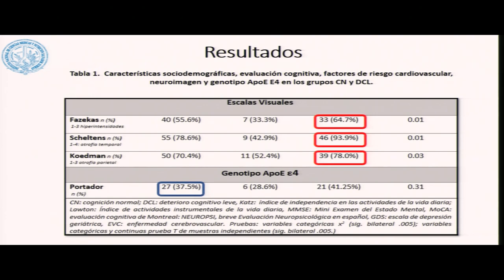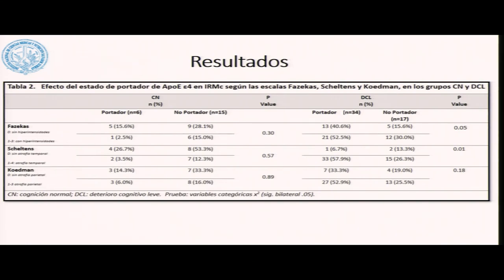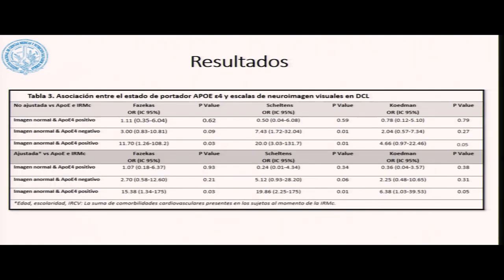De los 72 adultos mayores estudiados, el 37% tenía el genotipo APOE-Epsilon 4. Al analizar la relación del estado portador con las escalas visuales en aquellos con deterioro cognitivo leve y cognitivamente sanos, observamos que los pacientes con atrofia temporal medial que tenían el estado de portador y deterioro cognitivo leve presentaban más atrofia temporal y más carga de lesión vascular.